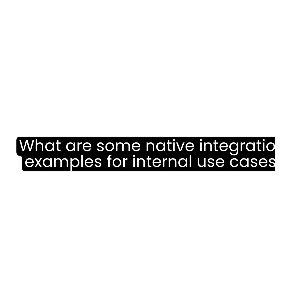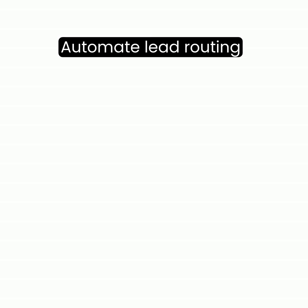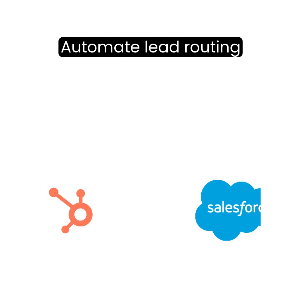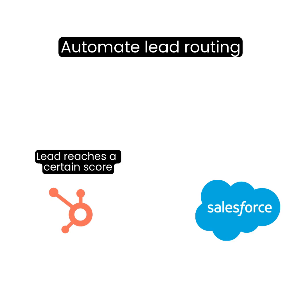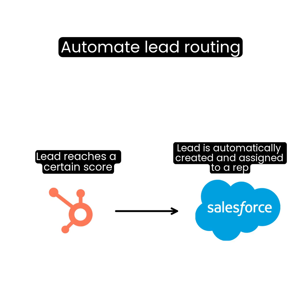Now what are some native integrations for internal use cases? Let's cover just a few examples. To help your sales reps respond to leads faster, you can integrate your marketing automation system, say HubSpot, with your CRM, say Salesforce, and build a flow where once a lead reaches a certain score, they're automatically routed to the appropriate rep in the CRM.